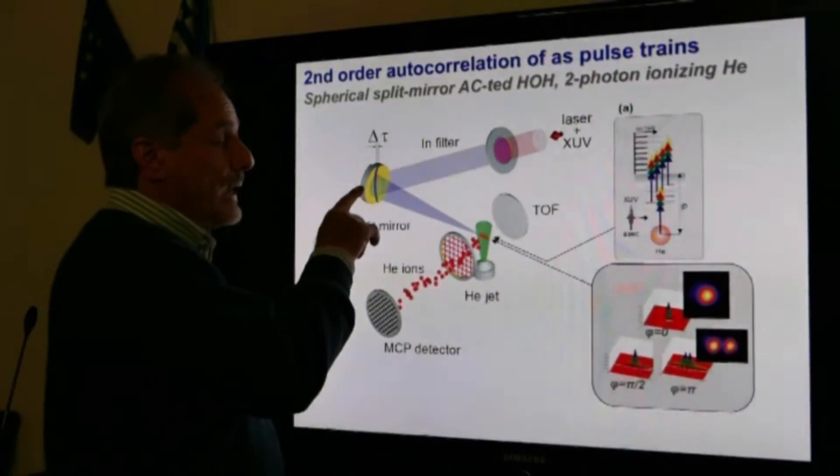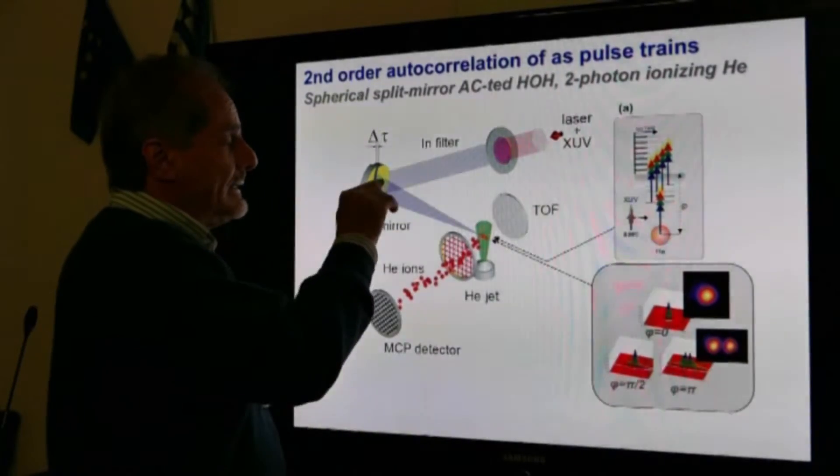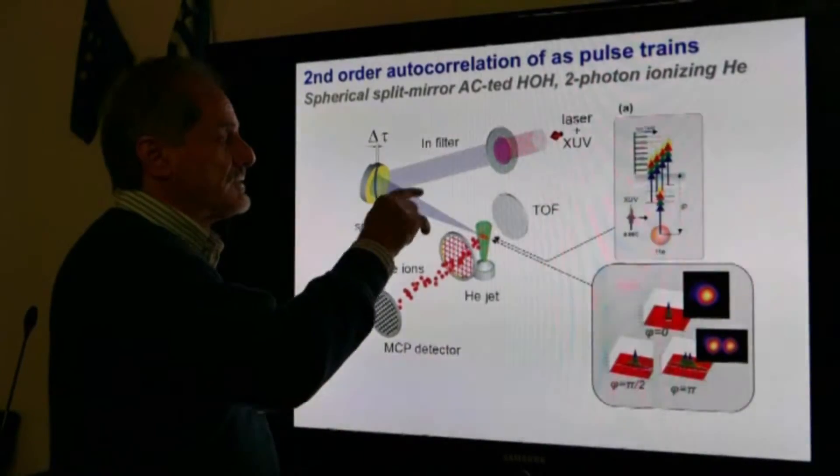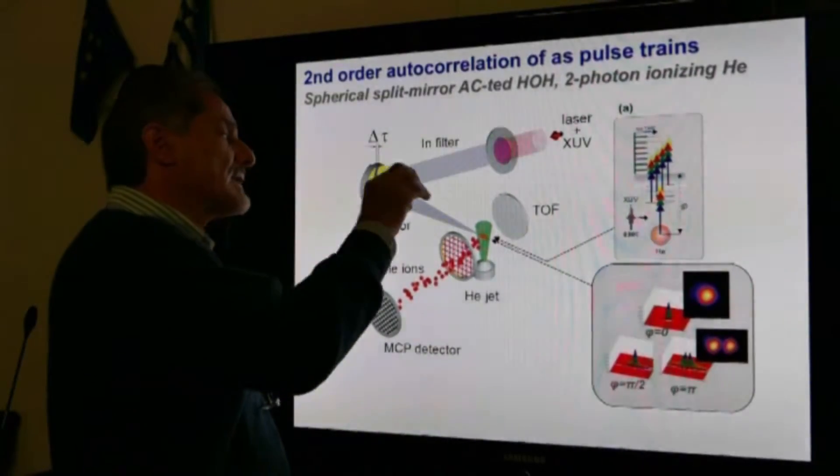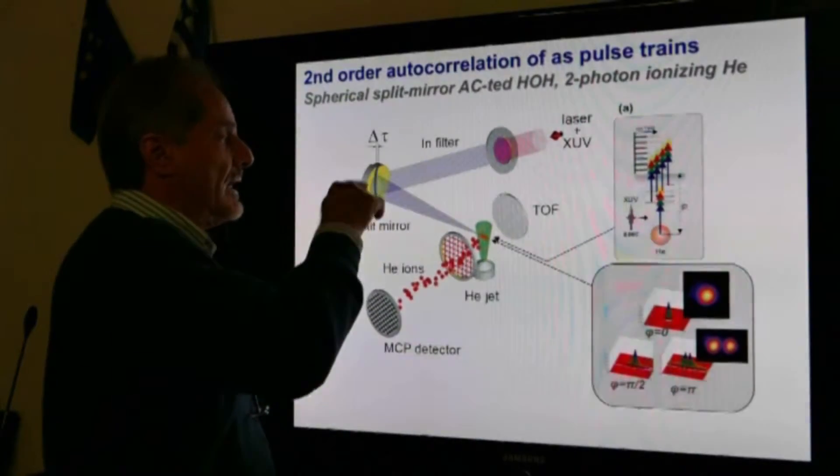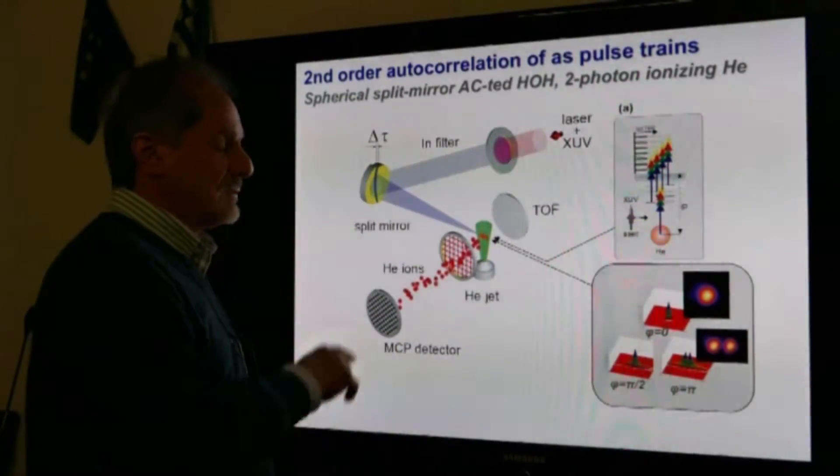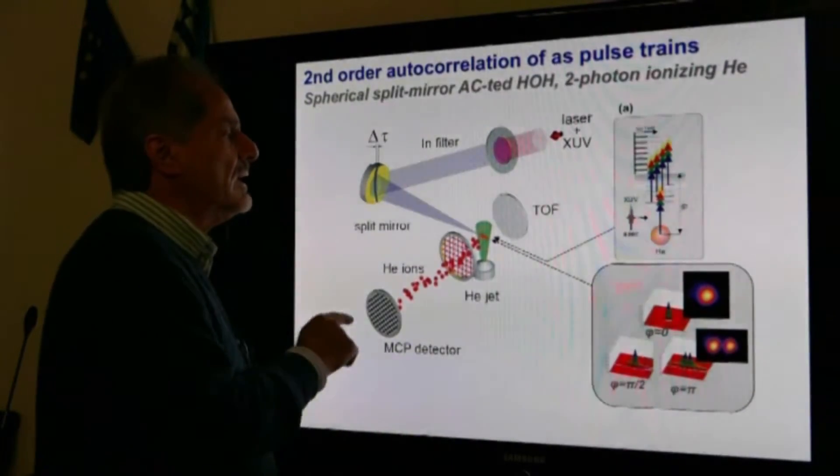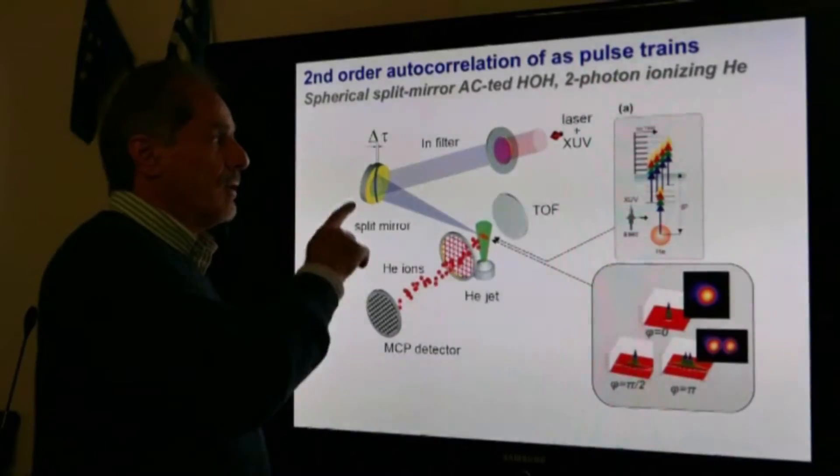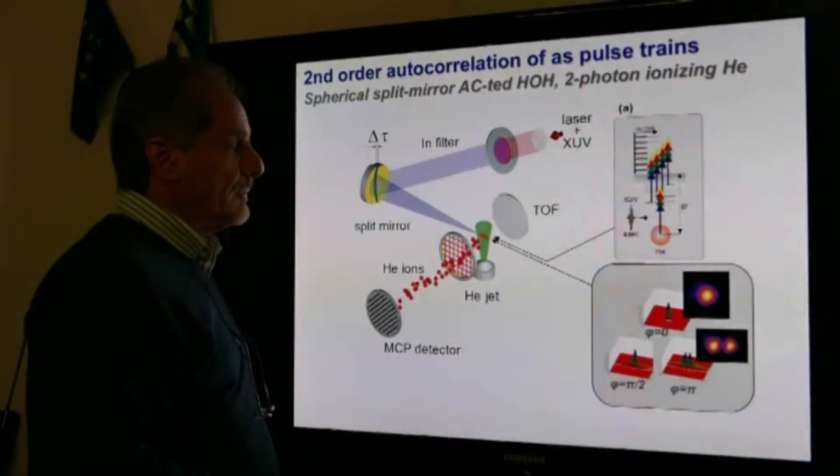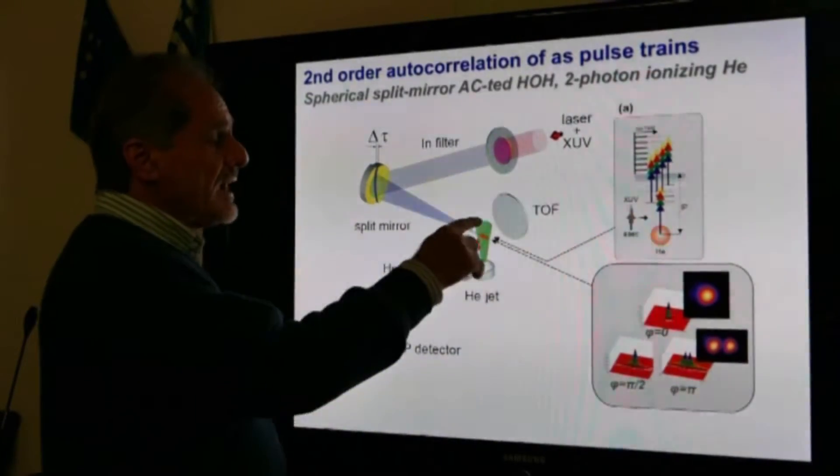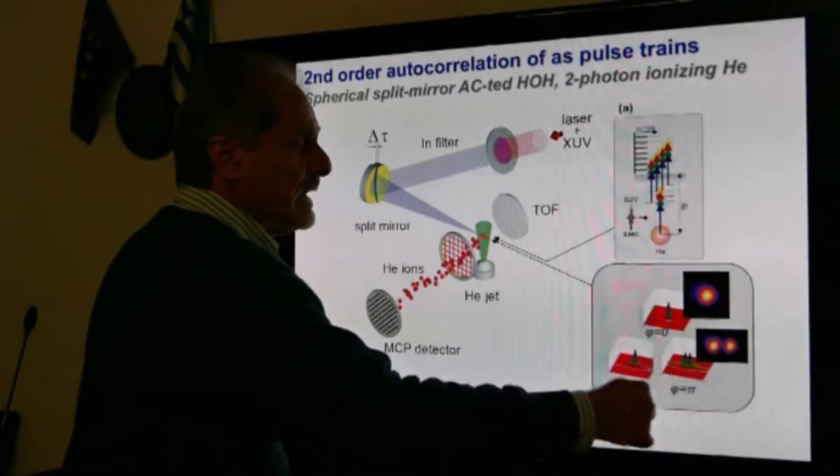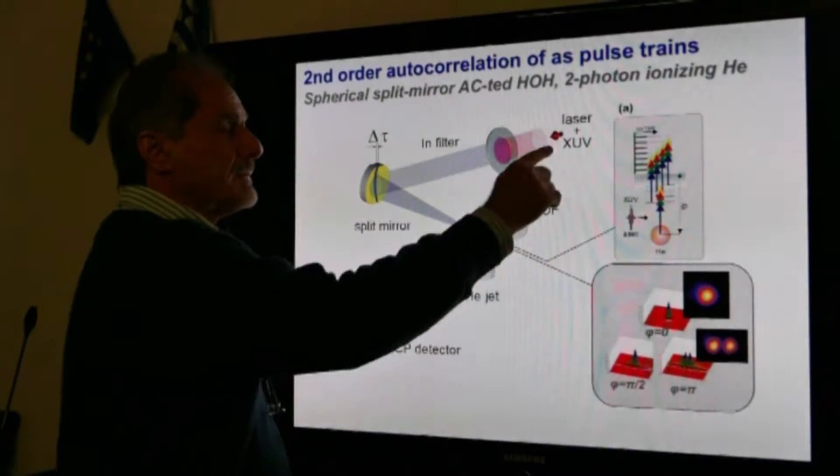Now we can introduce a delay between the two phase fronts or the two pulse parts that are produced by the split spherical mirror by translating with high accuracy one of the two halves of the mirror. What is happening in this case at the focus is shown here